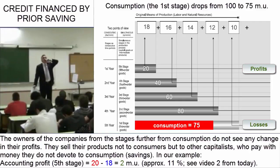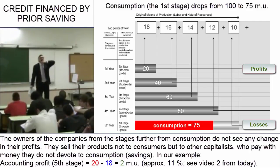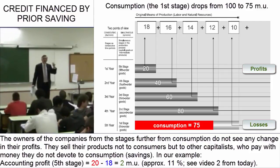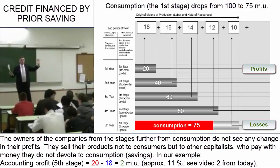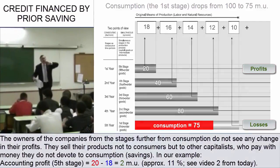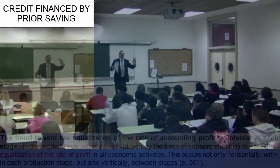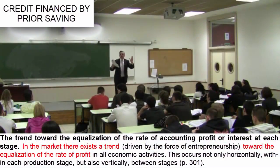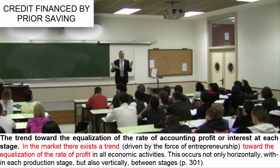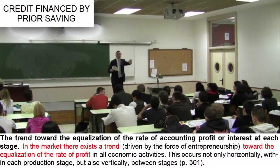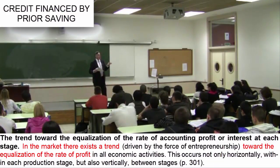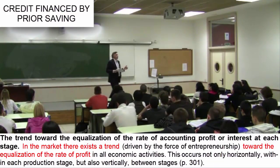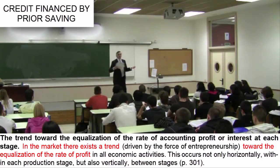Remember that in the chart of the productive structure we studied, the rate of profit — or interest rate, though this is a rough, imperfect way of speaking — was the same over all the stages: 11%. That is a result of entrepreneurs' desire for profit. If they see that in one stage there is a lot of profit and in another there are losses, they abandon the less profitable stages and move to the more profitable ones.